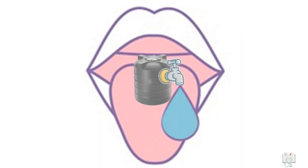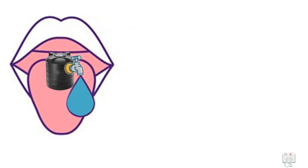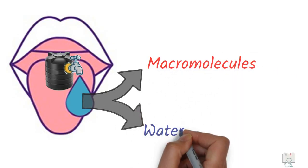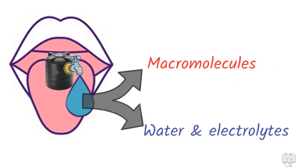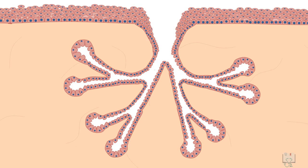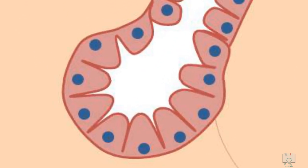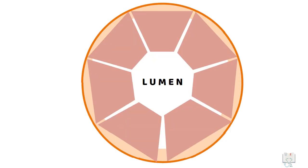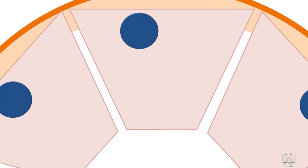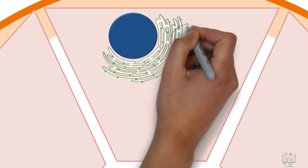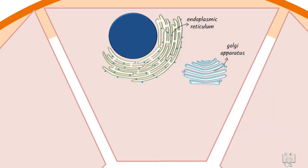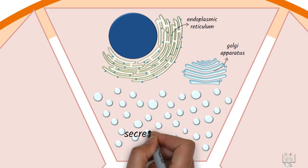The components of saliva can be broadly divided into two categories: the macromolecular component, and the water and electrolytes component. To understand the formation of primary saliva, we look at the secretory end pieces or acini. Salivary acini are made up of numerous pyramidal-shaped cells which have a single nucleus positioned towards the base, along with cell organelles like endoplasmic reticulum and Golgi apparatus. The apex part of the cytoplasm is filled with secretory granules.